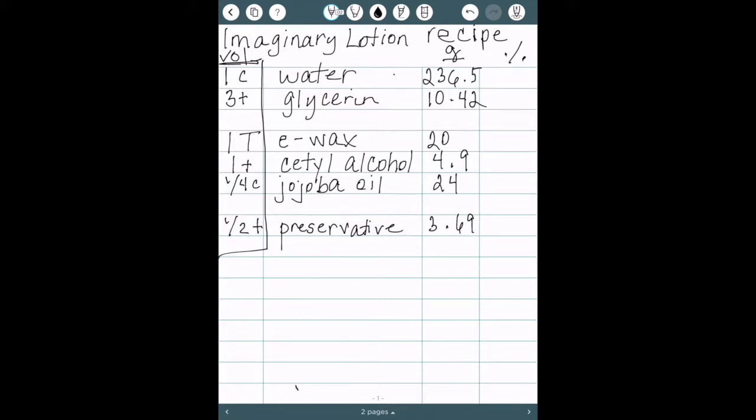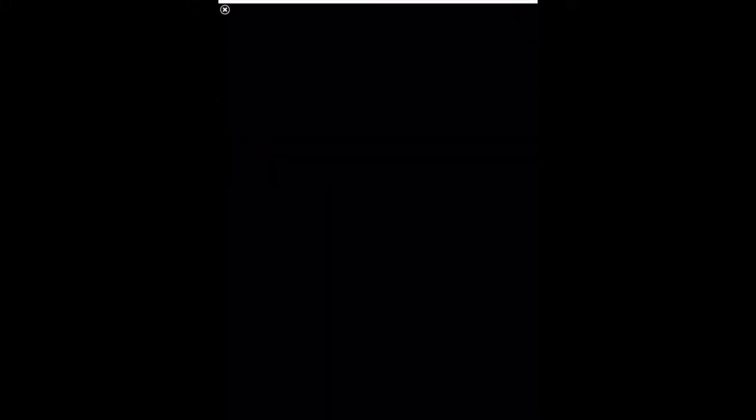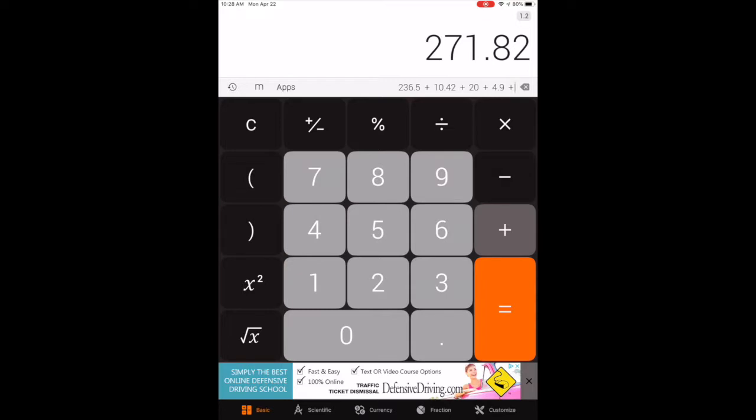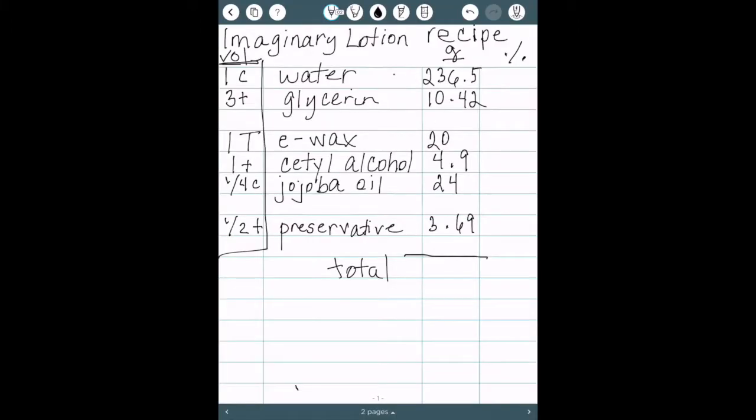So now what we need to do is figure out how many grams our recipe is in total. Now we go to our calculator and add the total of all those ingredients together. So we have 236.5 of our water, 10.42 of our glycerin, 20, 4.9 plus 24 plus 3.69 equals 299.51. So let's record our total: 299.51. Now we have to convert these grams into percentages. The equation to figure that out: